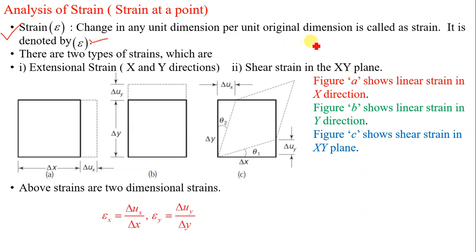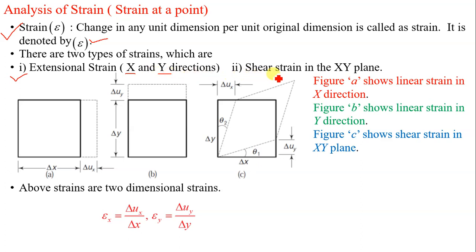Strain is a unitless quantity. There are two types of strains: extensional strain acting in x and y directions, and shear strain which acts in a plane, say the xy plane.